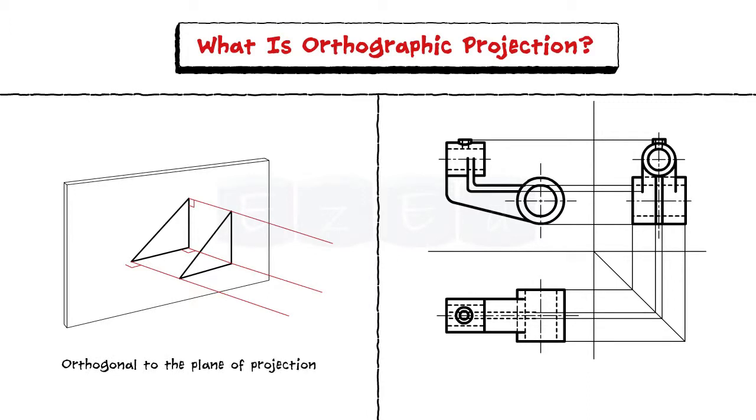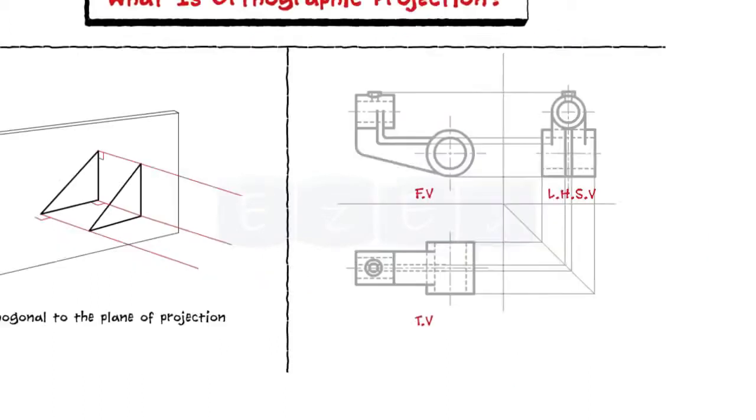An orthogonal projection represents different sides of an object. We will now take a look at the standard views.